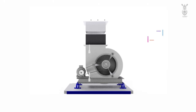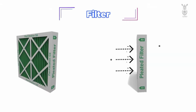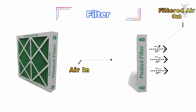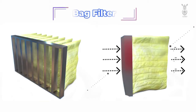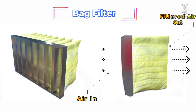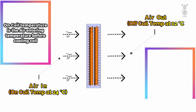The parts of the AHU are: Motor Blower — it is used to blow the air from AHU to the room. Filter — it is used to filter the dust from air. Bag Filter — it is used to filter the minute dust particles from air. Coil — chilled water from the chiller travels through this coil, and the AHU uses the cooling from this chilled water to distribute the chilled air to the rooms.